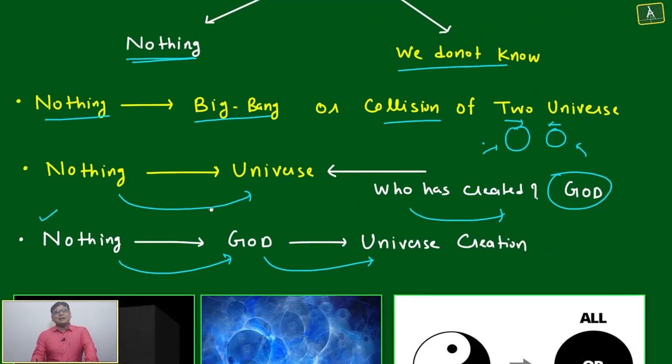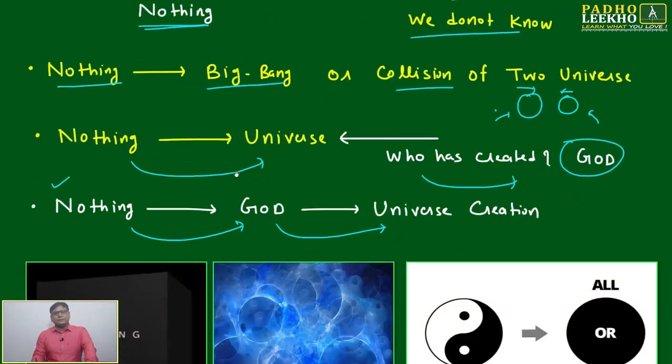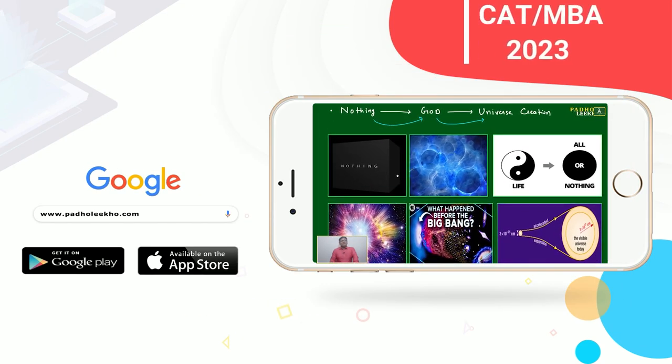Between nothing and universe, God has come in picture, and we are assuming this universe is created by God. This is our nodal point of logical sequencing of vocabulary. We will start learning from nothing, we will end with nothing. But between this journey from nothing to nothing, we will learn.